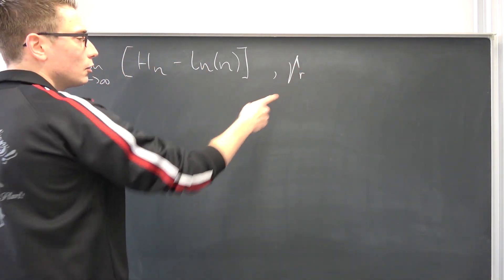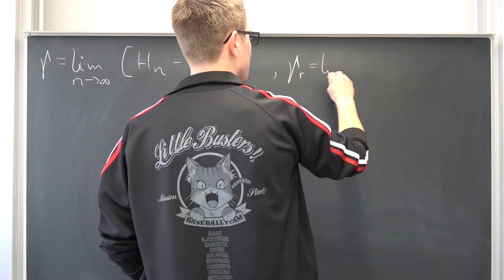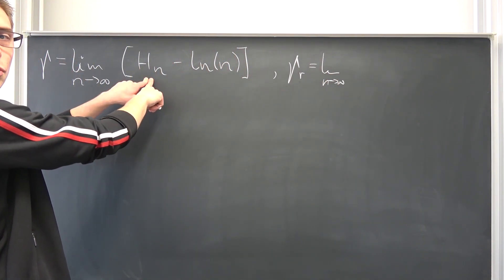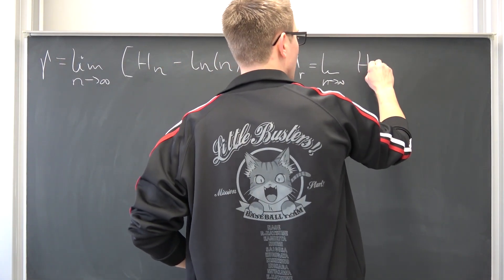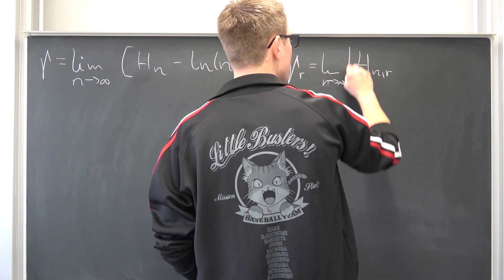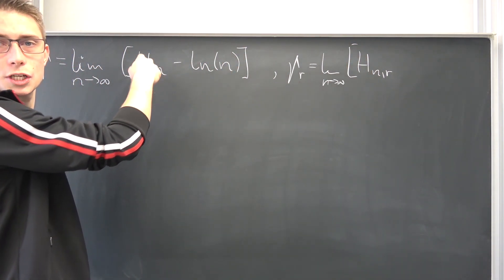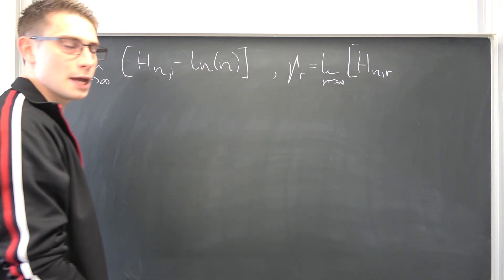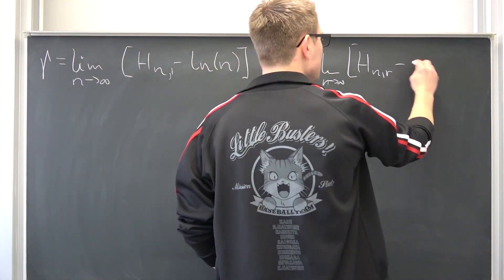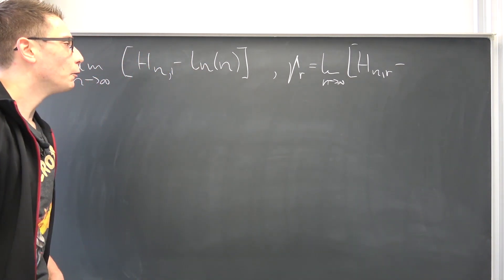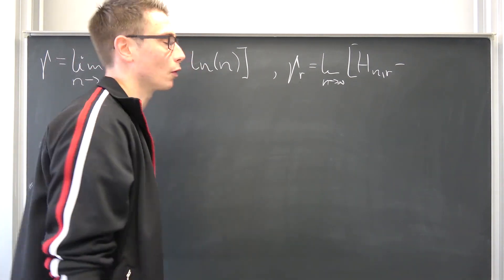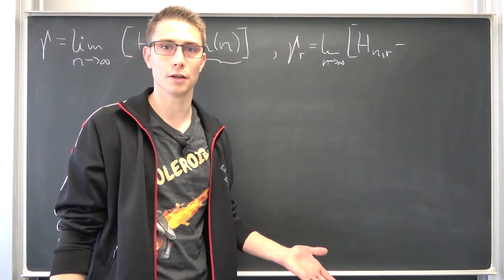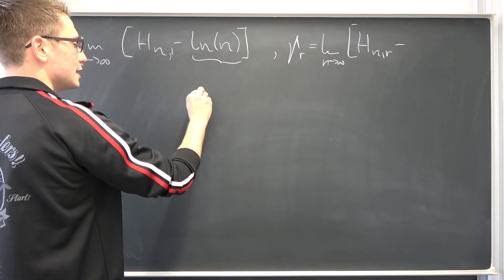I'm going to give it the index R. Gamma_R is thus the limit as n approaches infinity. We are going to make use of the generalized harmonic numbers. Those are basically also just a special case of generalized harmonic numbers where R is equal to 1. Maybe you can already see where this is going. How could we generalize the natural log of n even more? For that I would like to take a look at one of the many definitions of the natural logarithm as an integral.